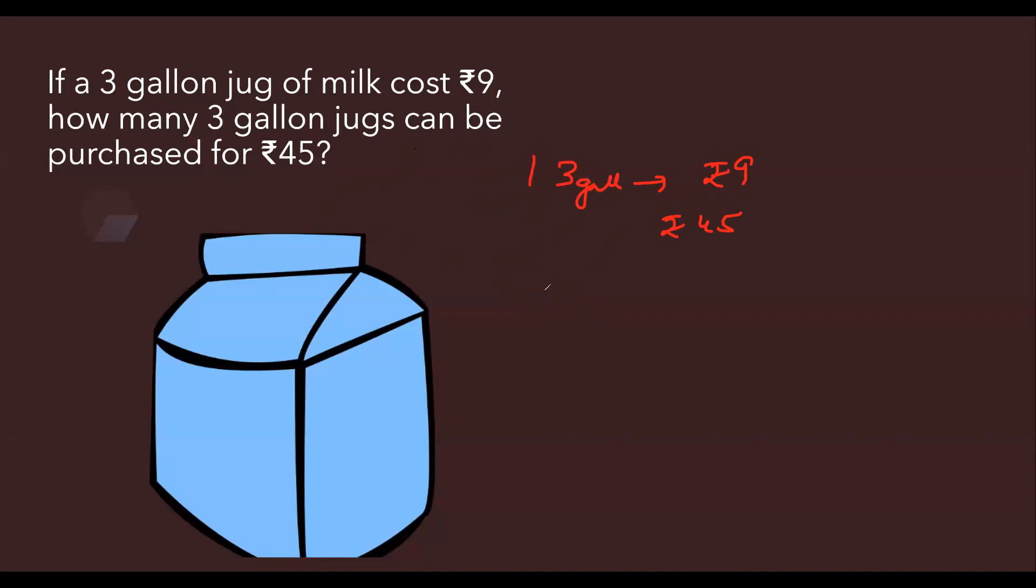It's the ratio between the jugs that we have. We have one 3 gallon jug and we don't know how many will come. So let that number be x. We have to put in proportion with the prices. So the price for 1 is rupees 9 and the price for whatever number we are buying is total price given to us as 45. So here we have the ratio for numbers and here we have the ratio for price.